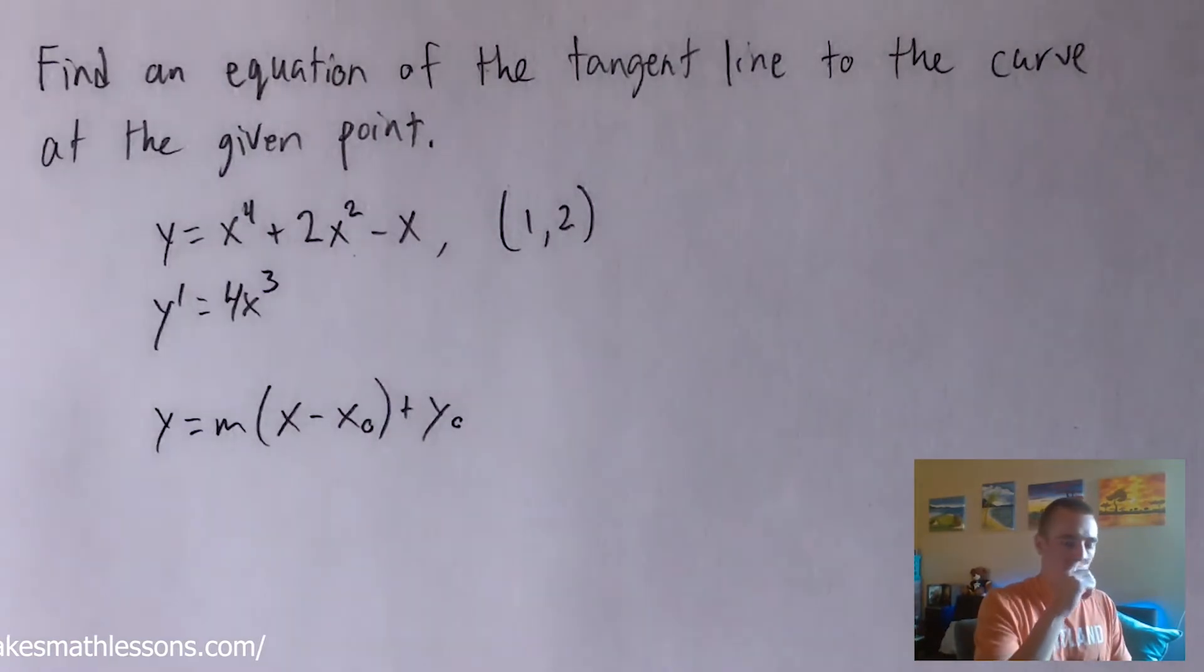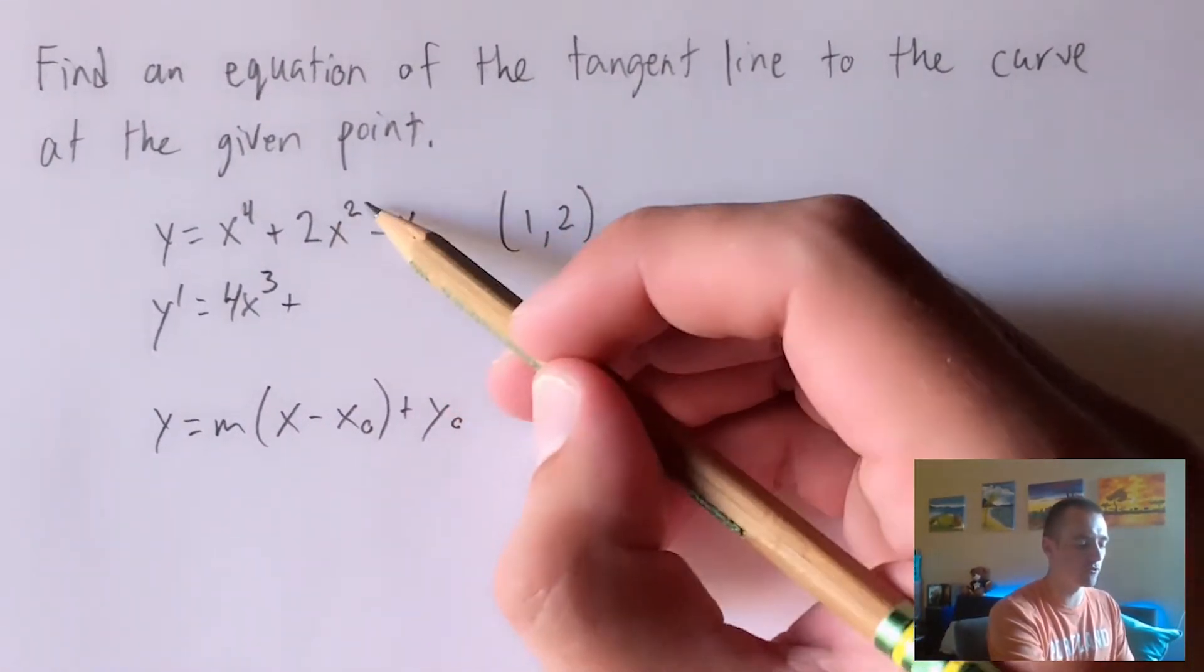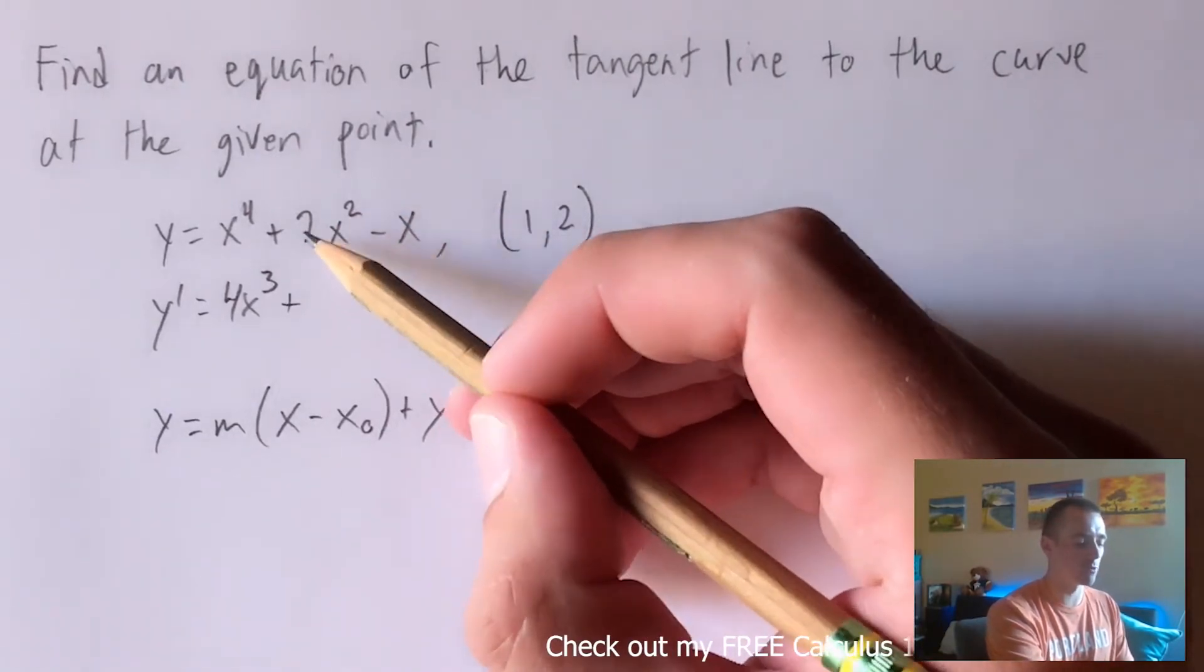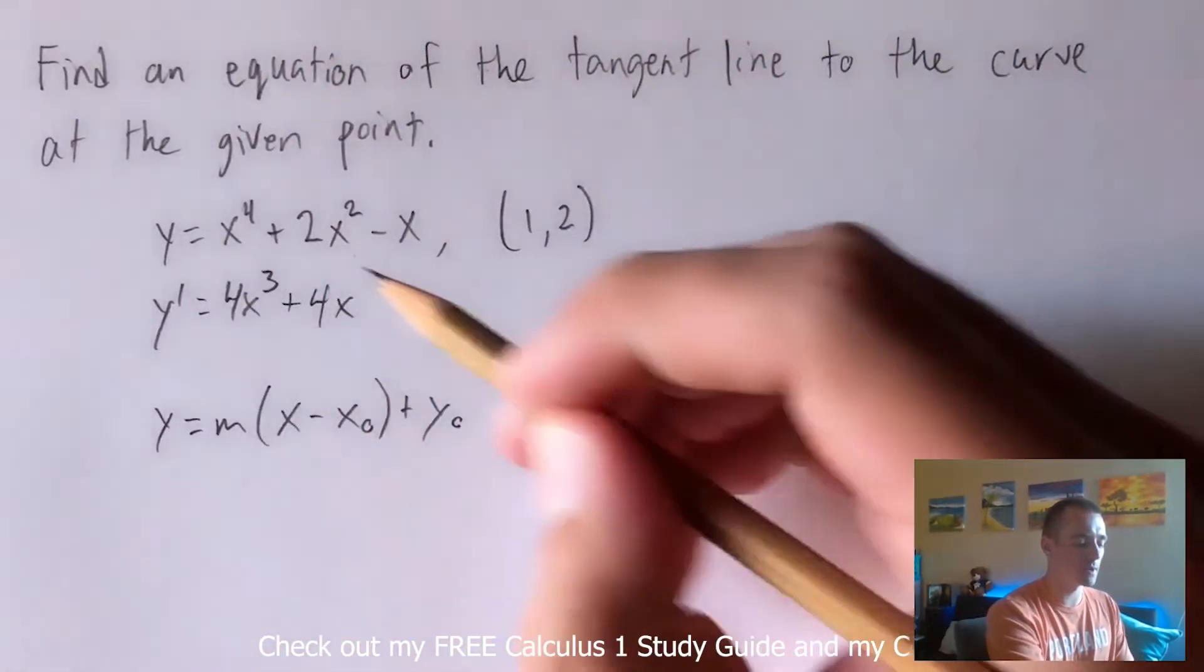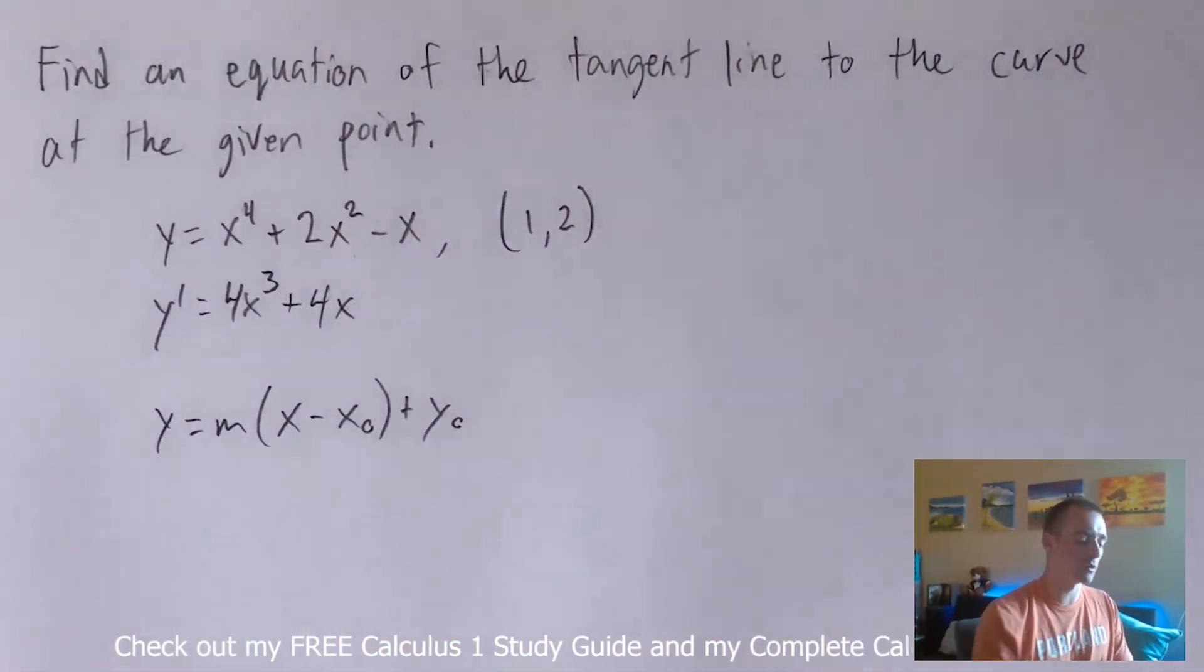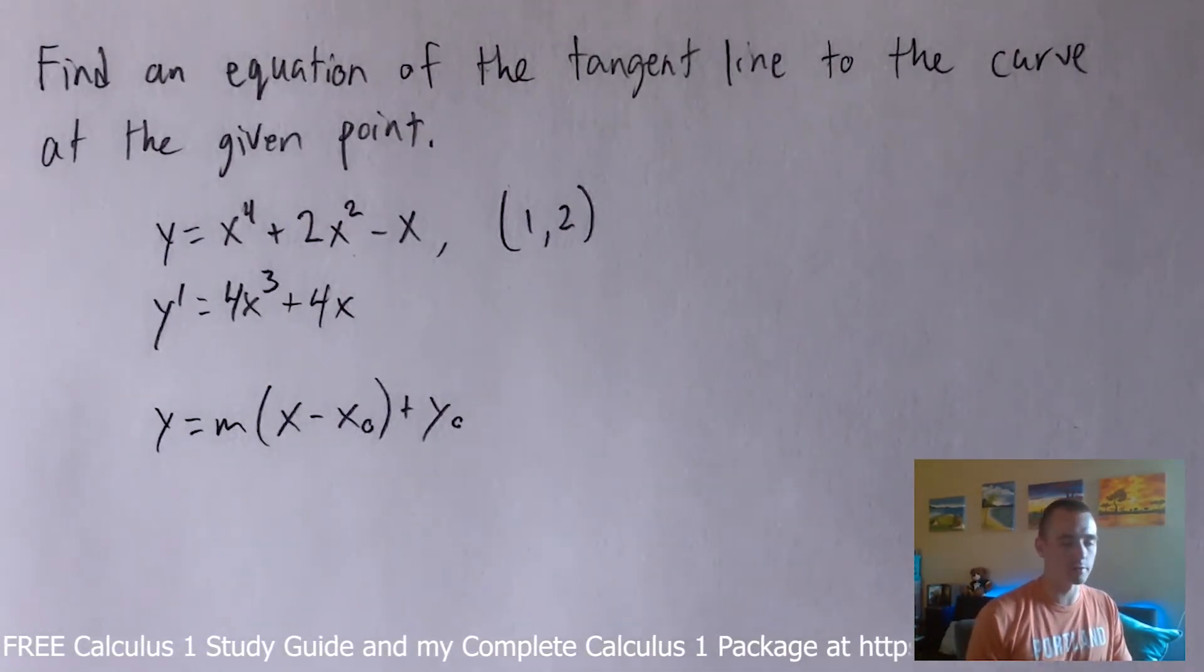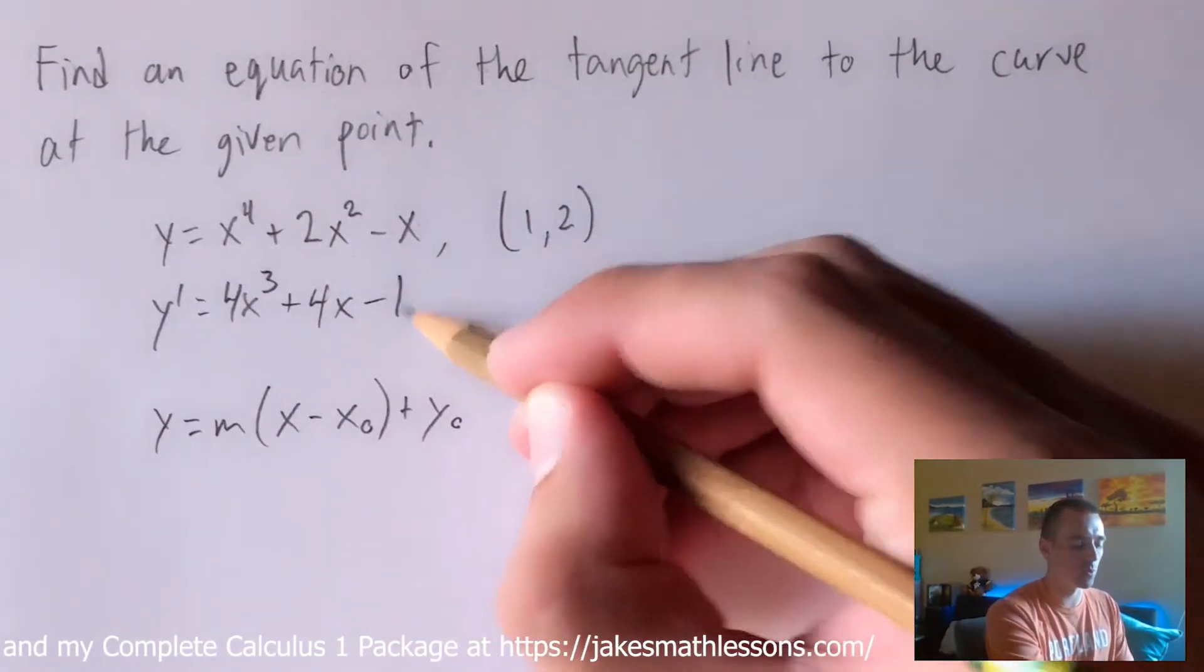So subtract 1 from the power and this is actually going to be applicable again to this term. We're going to bring our 2 down in front so we're going to have, we already have a 2 down here, when we bring another 2 down in front we're going to get 2 times 2 which is 4, leave our x as the base and then lower our power by 1. 2 minus 1 is 1, x to the first power is just x so we can just leave it as 4x. And then the derivative of x is just 1.